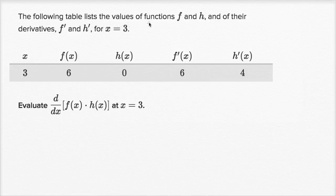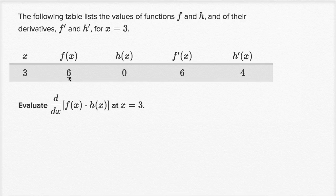The following table lists the values of functions f and h and of their derivatives, f prime and h prime, for x equal to three. So when x equals three: f of three is six, h of three is zero, f prime of three is six, and h prime of three is four. They want us to evaluate the derivative with respect to x of the product of f of x and h of x when x equals three.